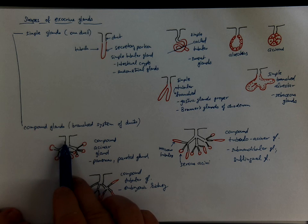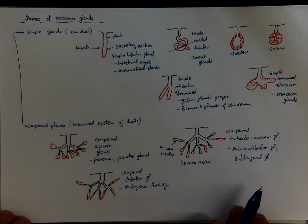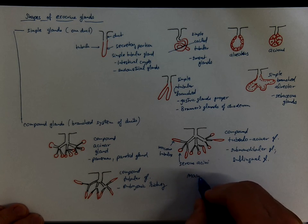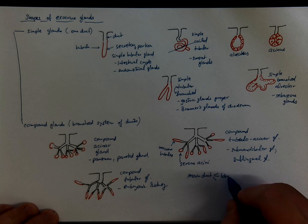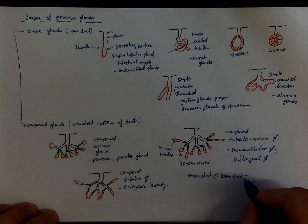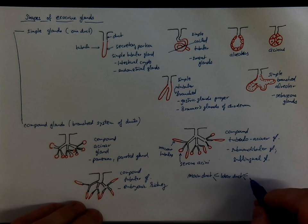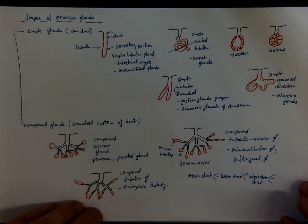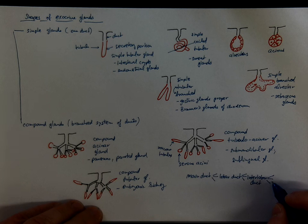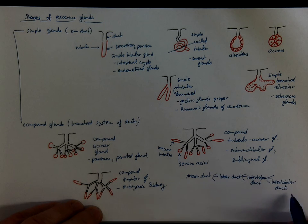In compound glands you have a tree of ducts. And there is a main duct that has a confluence of several lobar ducts. And that originates from several interlobar ducts into which several smaller ducts contribute.